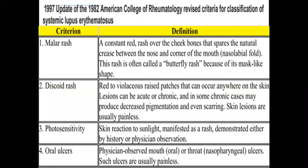The American College of Rheumatology (ACR) criteria were first postulated in 1982 and revised in 1997, listing 11 criteria. We still reference these criteria today. Even though new SLIC criteria were postulated in 2012, they did not render the 1997 ACR criteria obsolete.